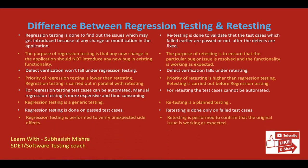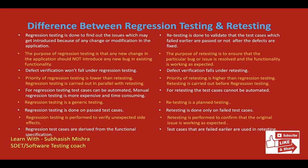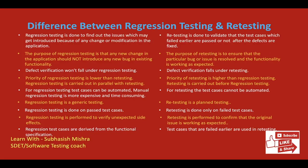Regression testing is performed to verify unexpected side effects, whereas retesting is performed to confirm that the original issue is working as expected. Whenever we add a new functionality there may be a side effect — that's why regression testing is performed to verify unexpected side effects. Regression test cases are derived from the functional specification — whatever functional test cases or functional specification we have, we can form the regression test cases from those. Whereas test cases that failed earlier are used in retesting — we don't have to write the test case again for retest because we can use the existing failed test cases.